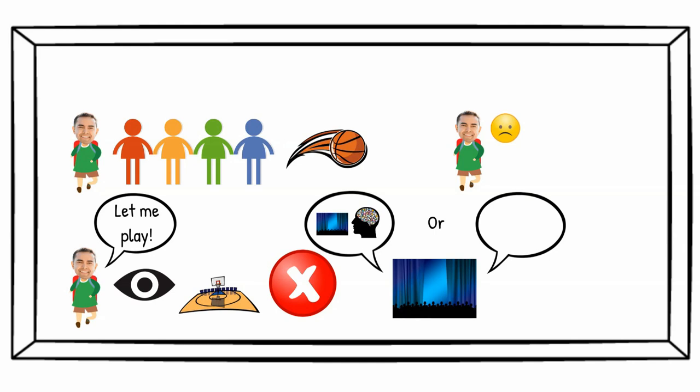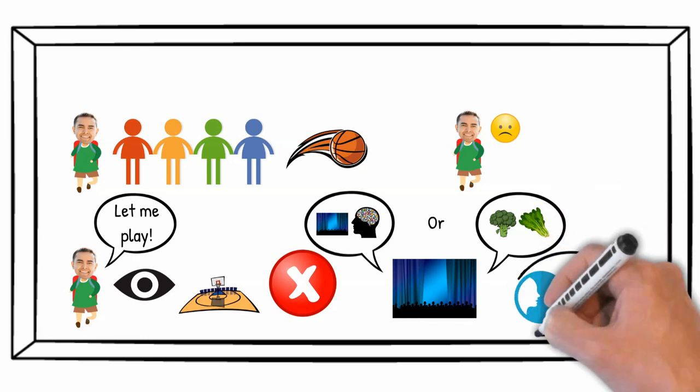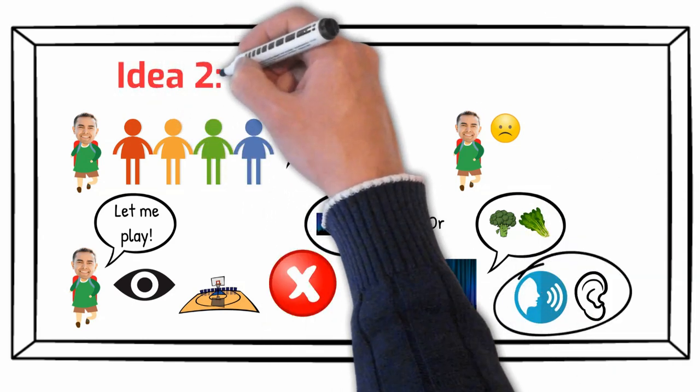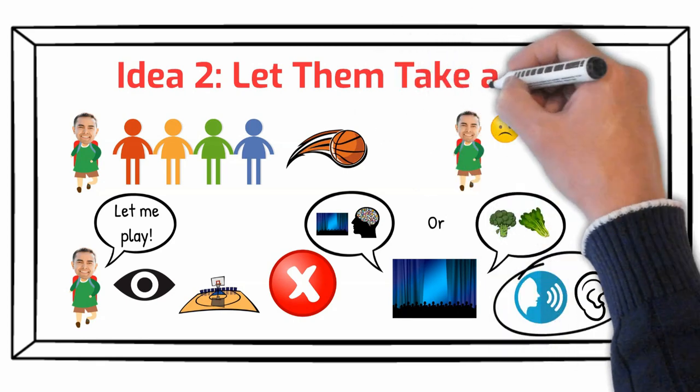Like, for example, which vegetable is healthier? Broccoli or spinach? In any case, the most important thing is that their opinion will be heard. Idea number two is let them take a shot.